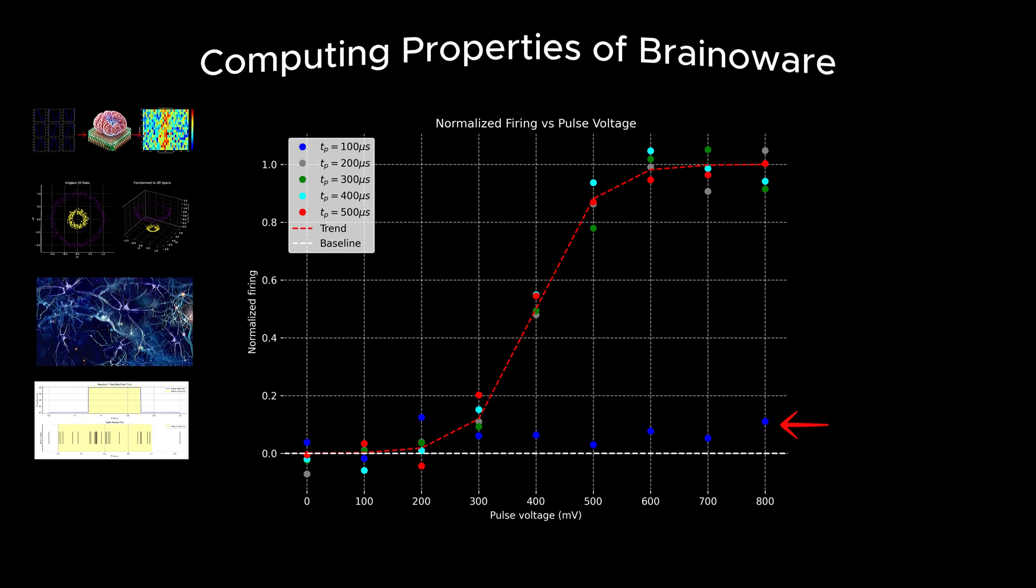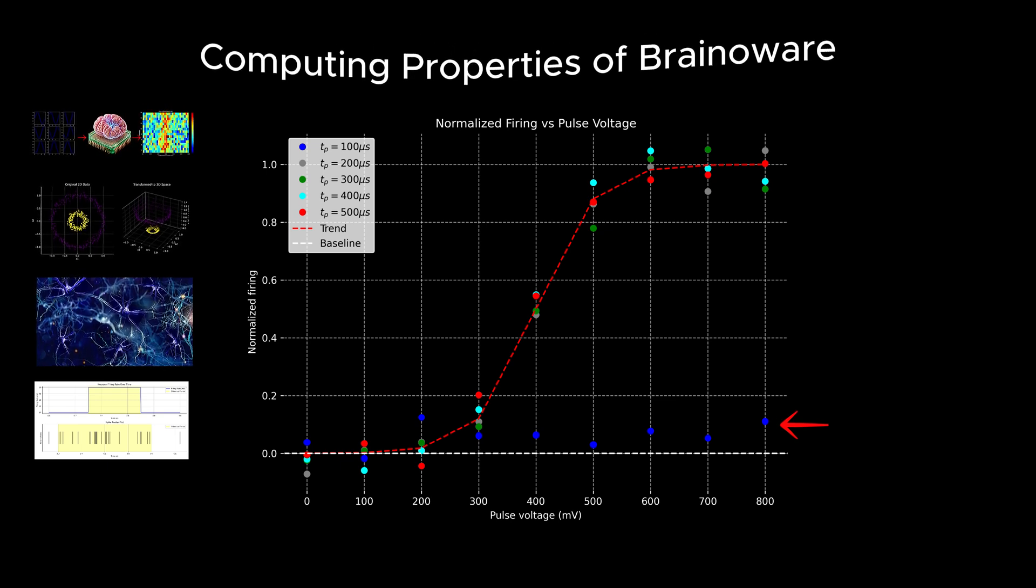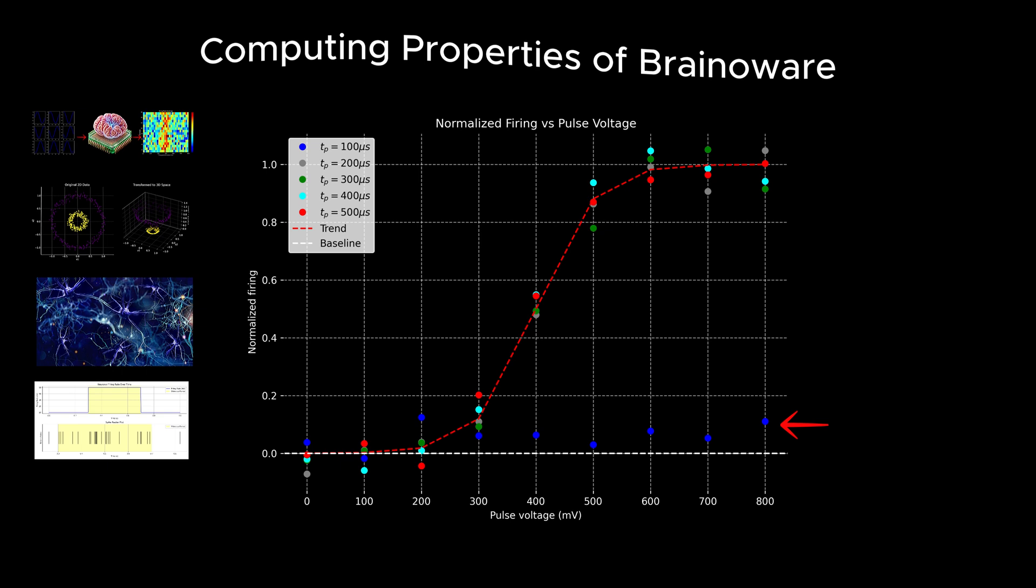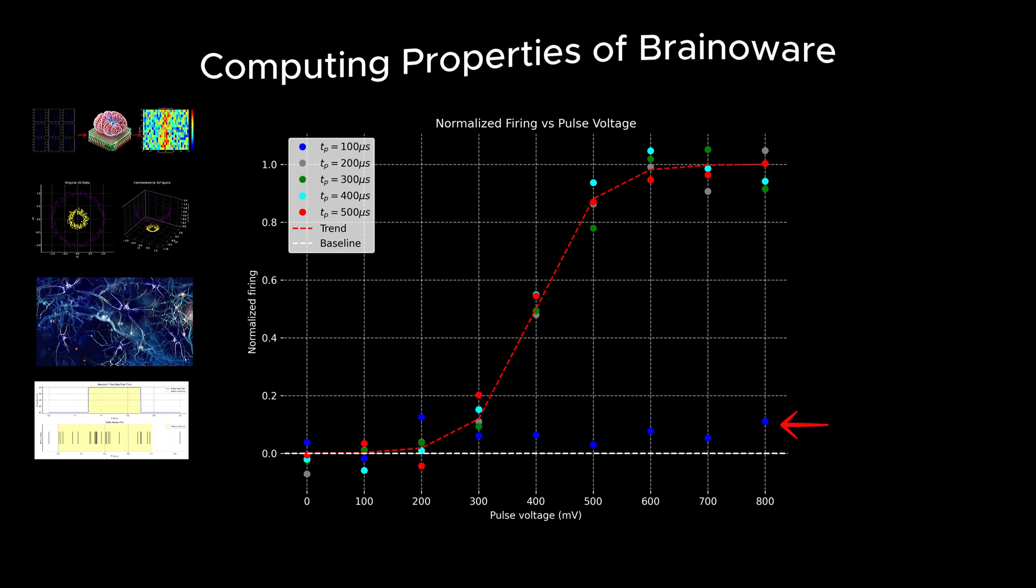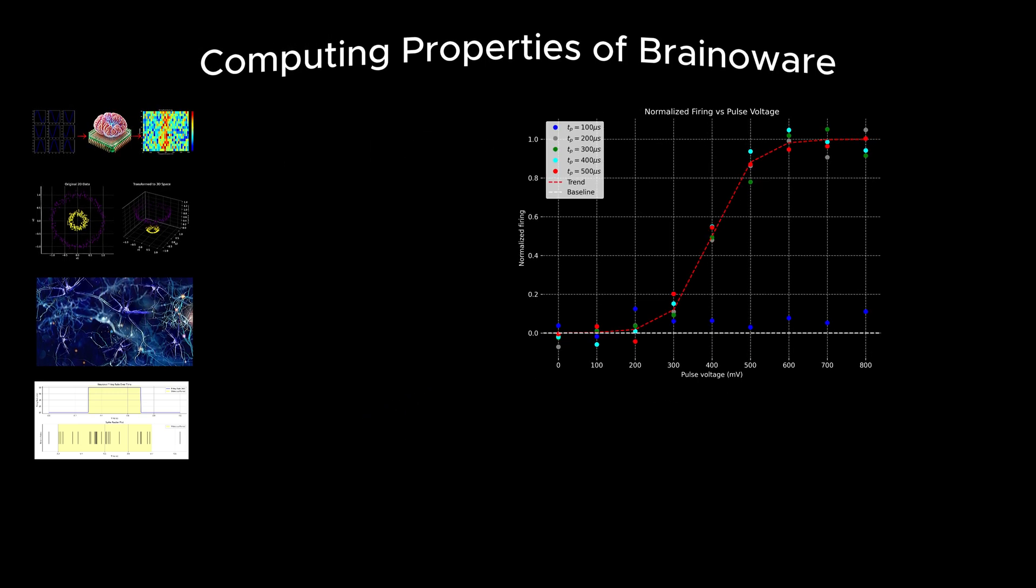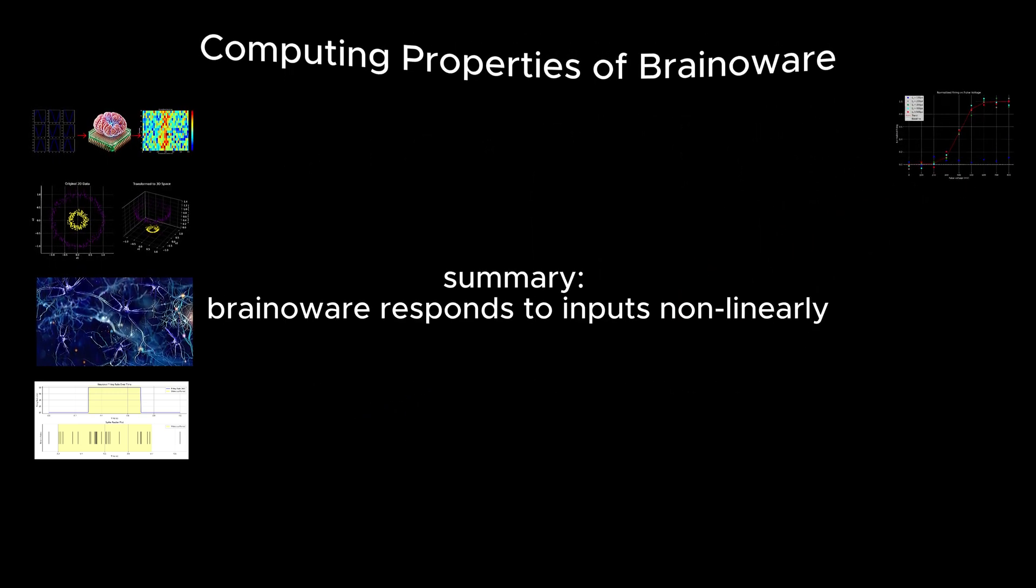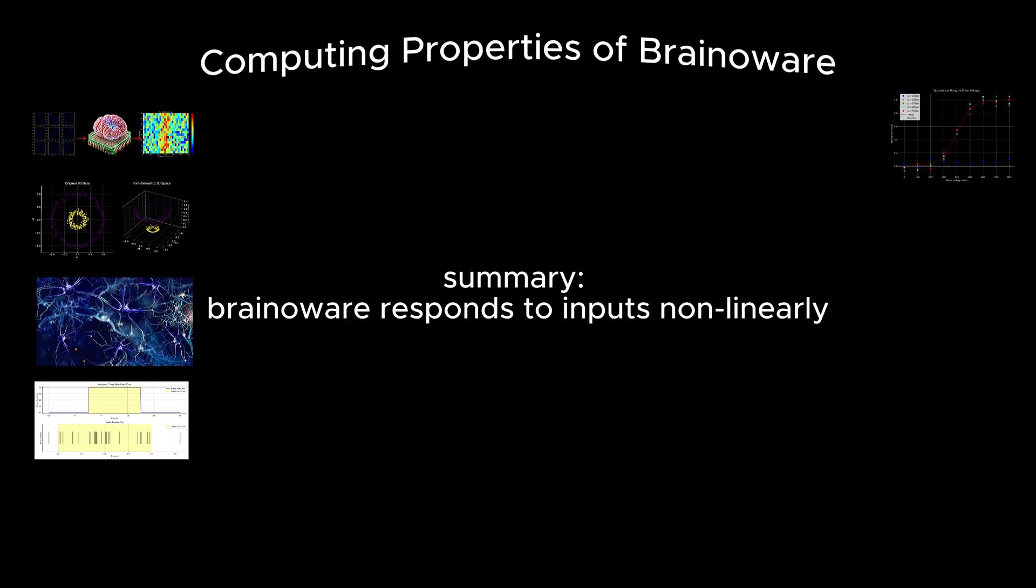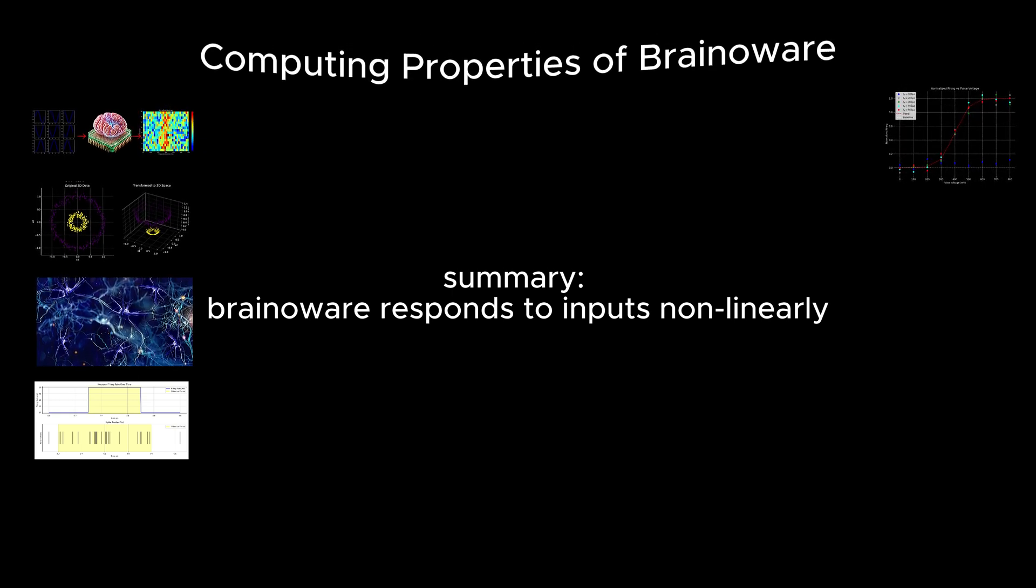Shorter pulses, however, failed to evoke activity beyond the baseline level of spontaneous neuronal firing, demonstrating the system's sensitivity to the parameters of stimulation. This non-linear behavior is foundational to BrainAware's ability to process and analyze complex data effectively.